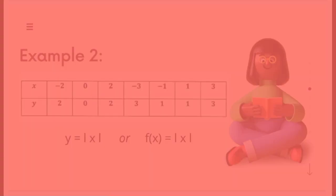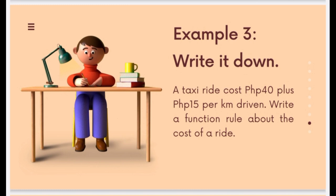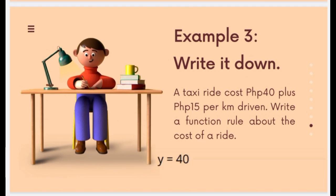Let's now proceed to problem 3. A taxi ride costs 40 pesos plus 15 pesos per kilometer driven. Write a function rule about the cost of a ride. In here, the cost of a ride is our y, since it is dependent on our x, which is the number of kilometers driven. Therefore, our rule here is y equals 40 plus 15x, or f(x) equals 40 plus 15x. This is because a passenger will pay 40 pesos even if the ride has not yet started, plus 15 pesos per kilometer.